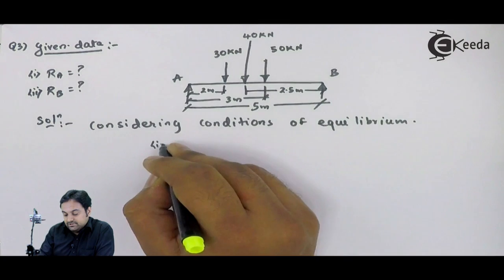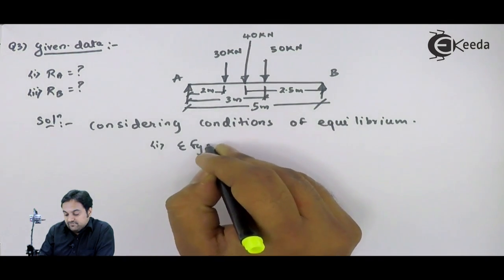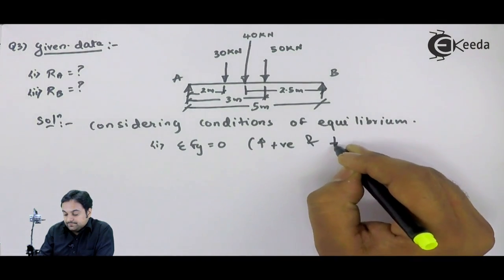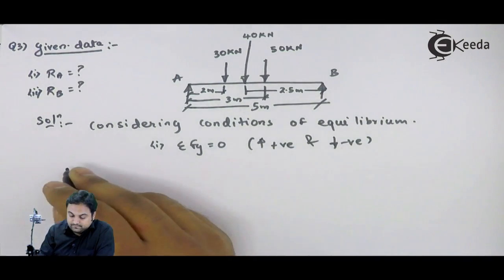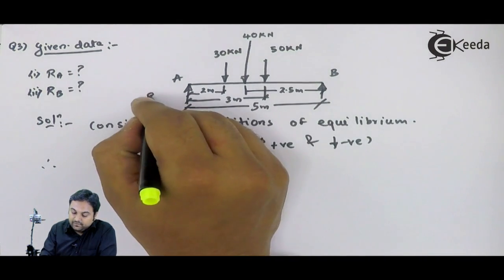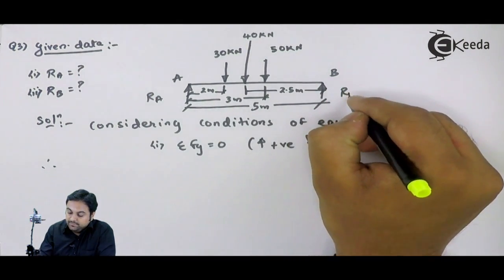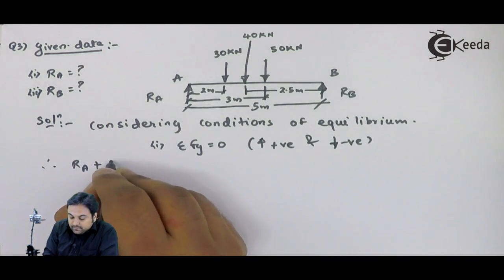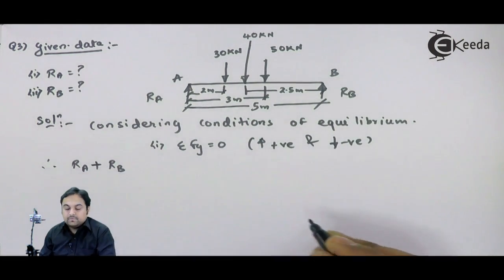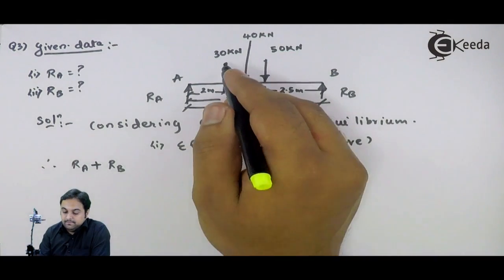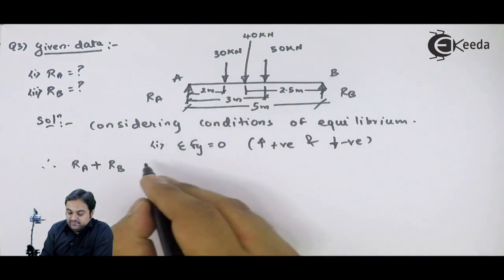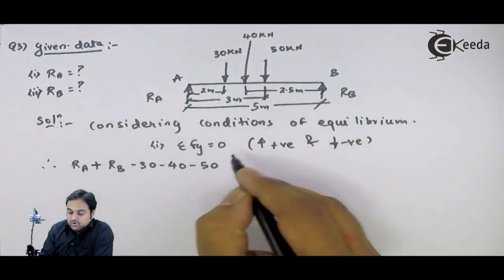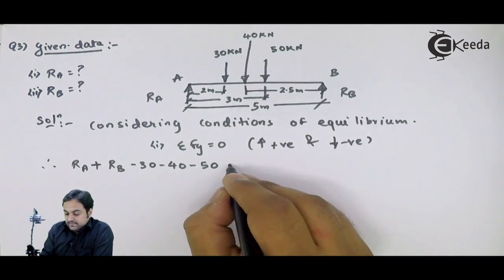I will write down the first condition: summation of Fy equals 0, because no horizontal forces are there. Here I have RA which is upward, RB which is also upward. Therefore, I have RA plus RB minus 30 minus 40 minus 50. All the loads are downward. That equals 0.